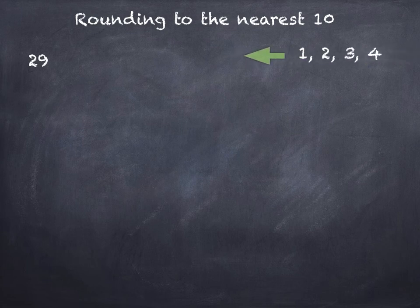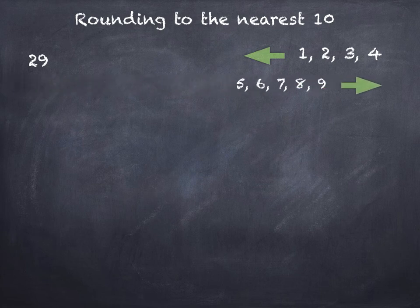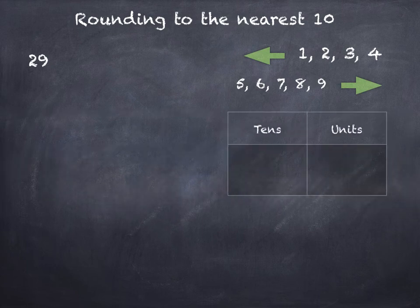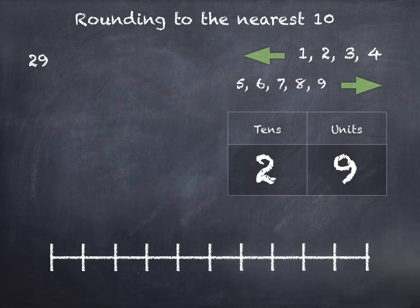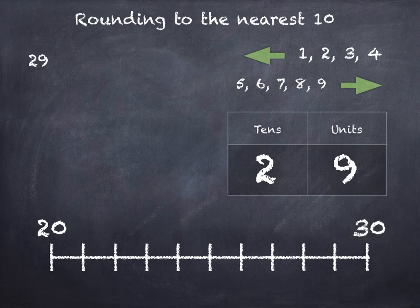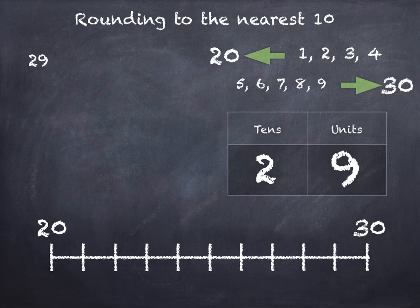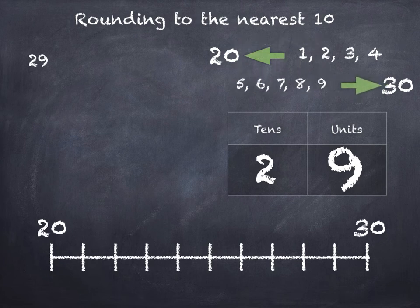Let's see how we would round 29. Remember if the units digit is 1, 2, 3 or 4 we round down, and if the units digit is 5, 6, 7, 8 or 9 we round up. So 29 has two 10s and 9 units and it sits between 20 and 30. So we could round down to 20 or round up to 30. The units digit is 9, so that tells us that we will be rounding up to 30. The 29 is nearer to 30 than 20 if we put it on the number line.